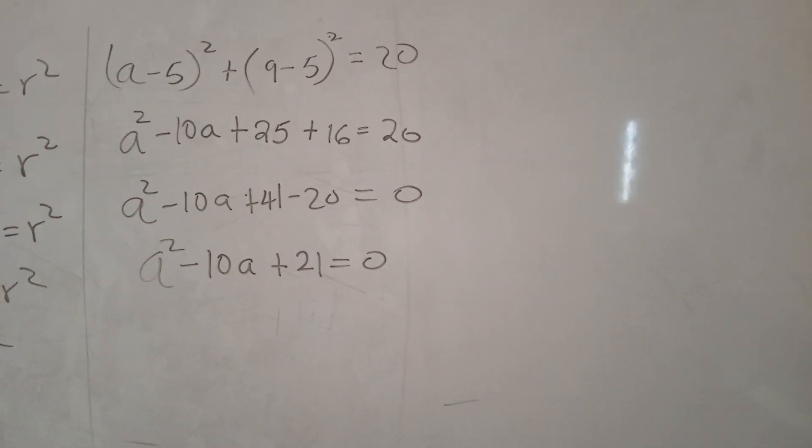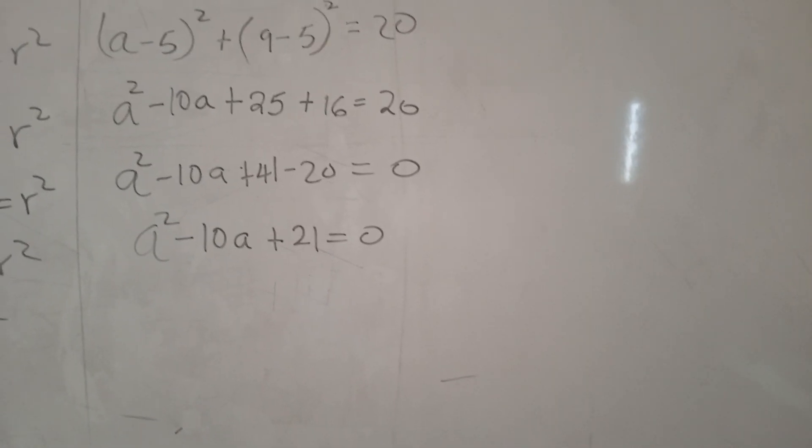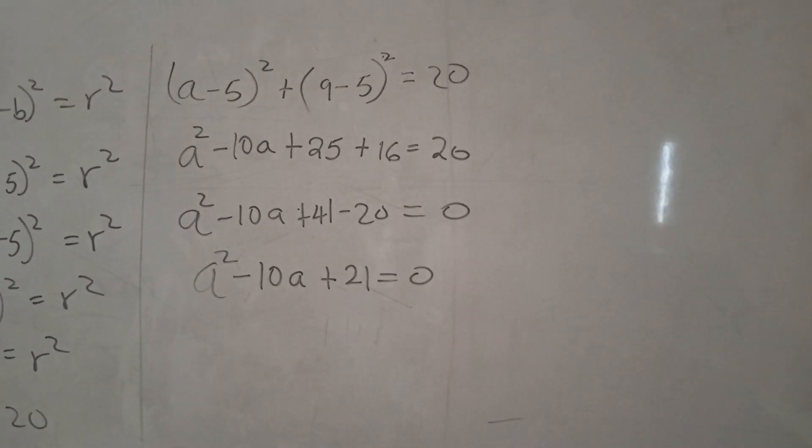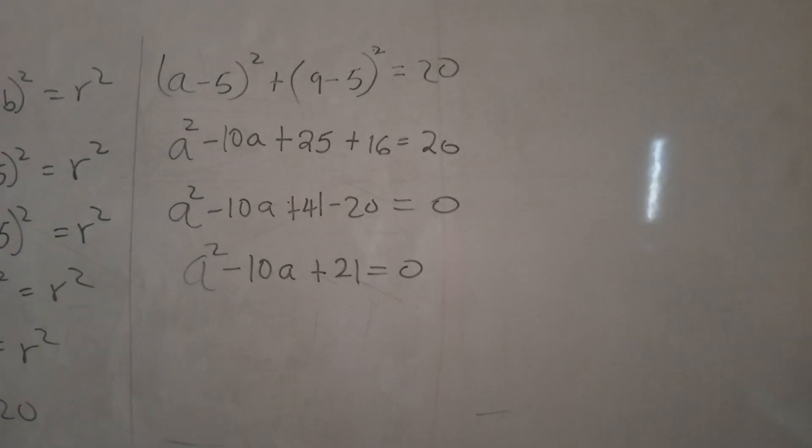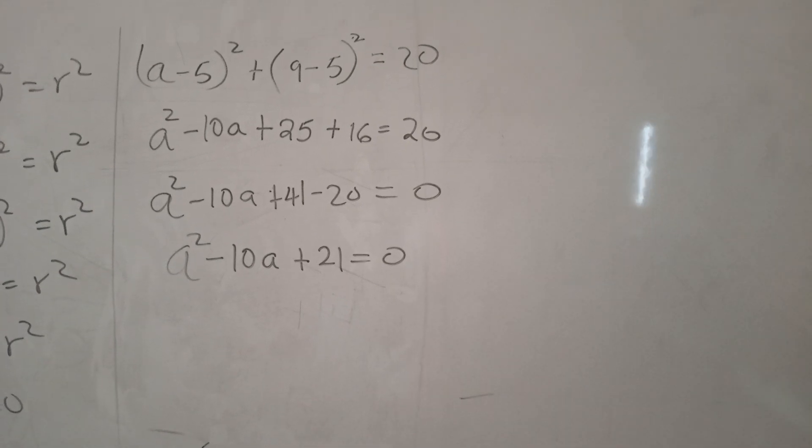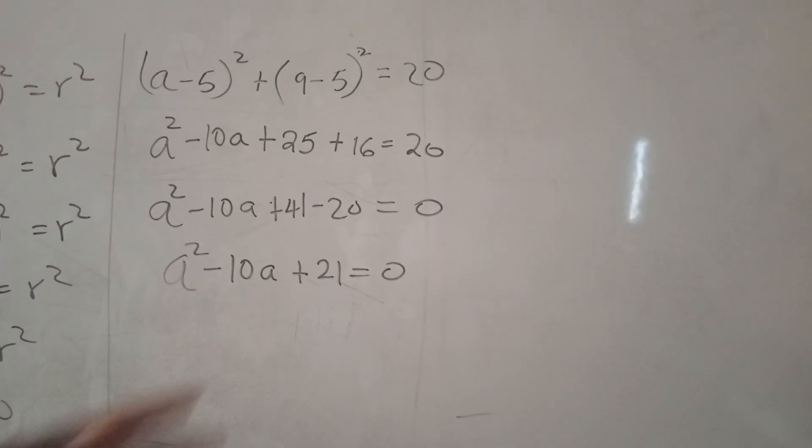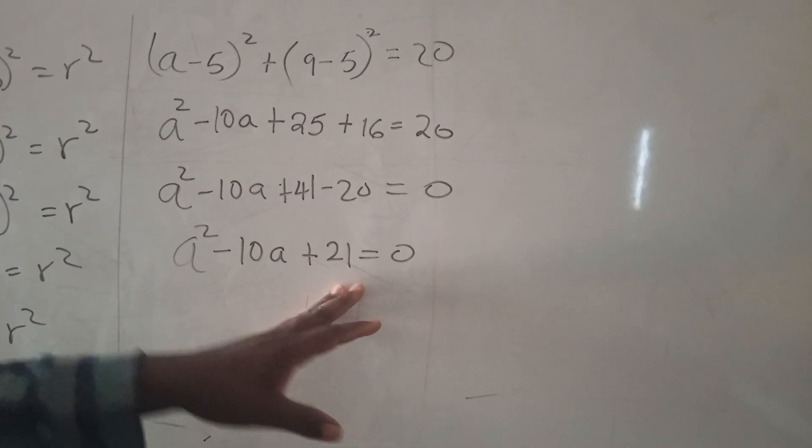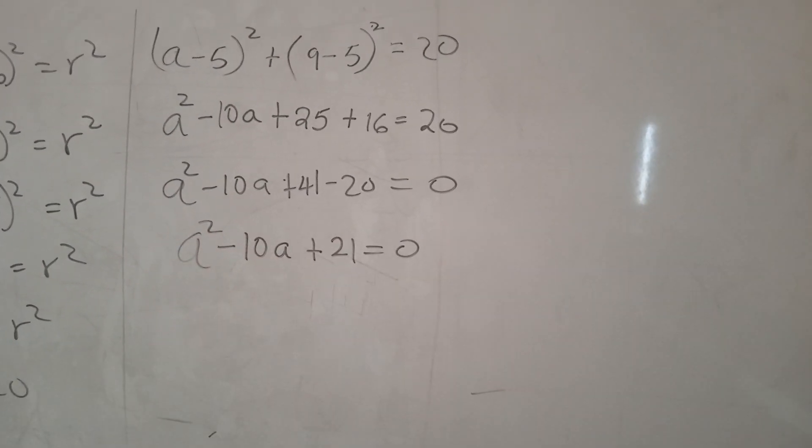So we are going to look for two numbers. When you multiply, you get 21. The coefficient of a² here is actually 1, so 1 times 21, the product will be 21. We look for two numbers such that when we multiply them, we get 21, but when we add, we get -10.